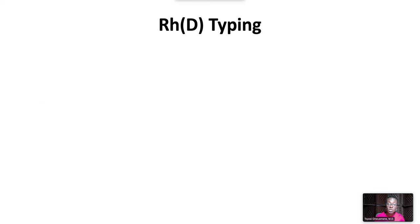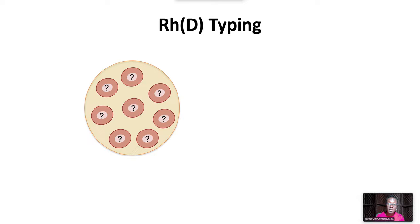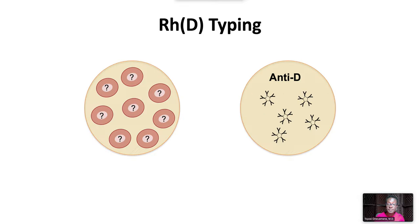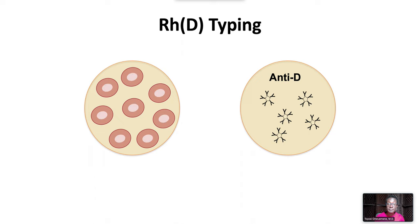For Rh, only forward typing is needed. The unknown cells are tested against anti-D serum. If the unknown red cells are type D positive, there will be a reaction with anti-D serum. If the unknown cells are type D negative, there will be no reaction with anti-D serum.